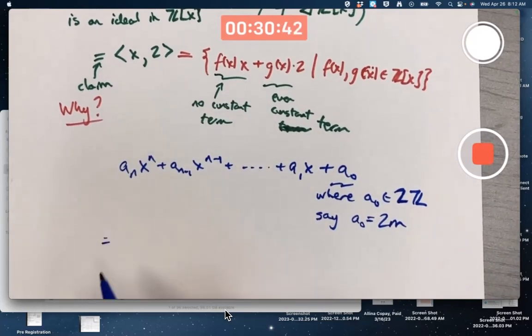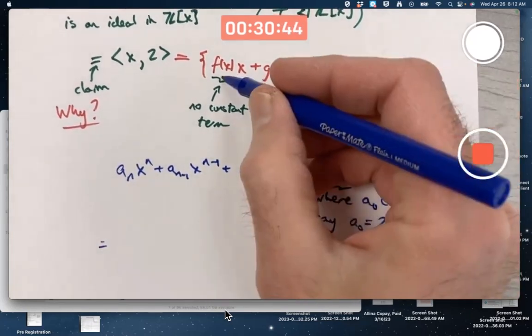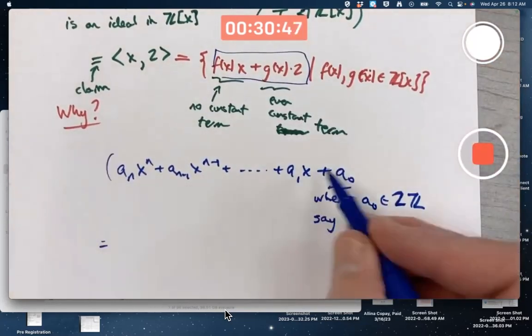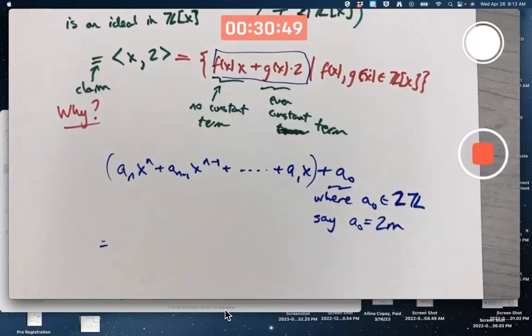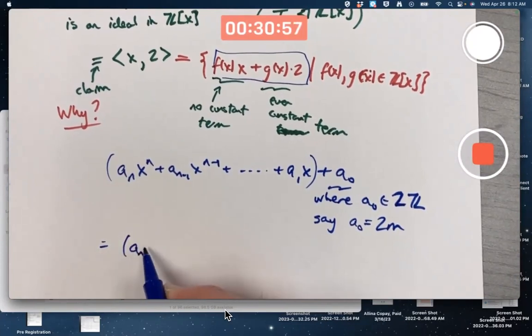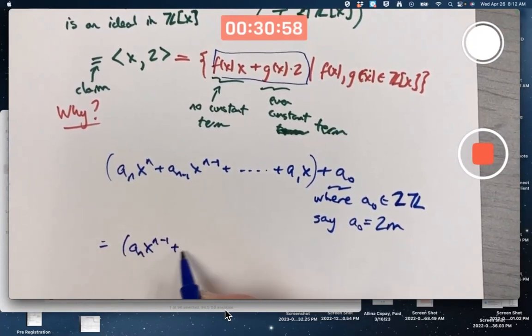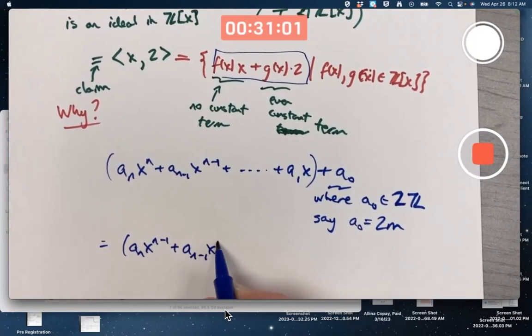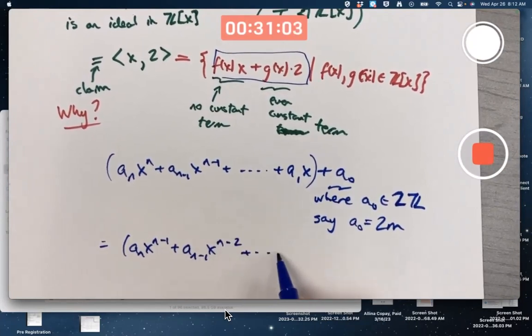Then I can rewrite this polynomial in this form. How? With the first n minus 1 terms—no actually those would be n terms—factor out an x.